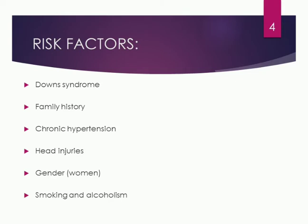Risk factors — those that predispose an individual to get the disease — include Down syndrome, family history (if first- or second-degree relatives have had Alzheimer's disease, there is a chance of getting the condition), chronic hypertension, head injuries, gender (women have a greater risk of getting Alzheimer's disease), and smoking and alcoholism in excess. These are the risk factors of Alzheimer's disease.